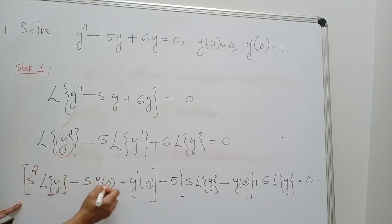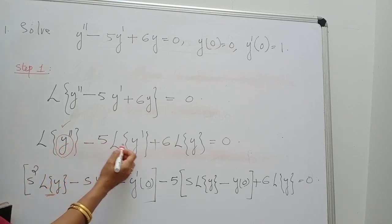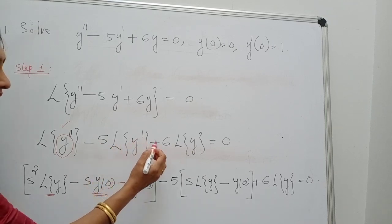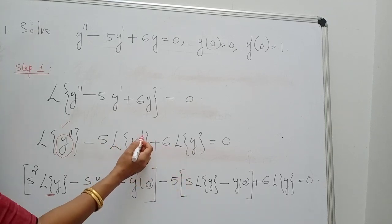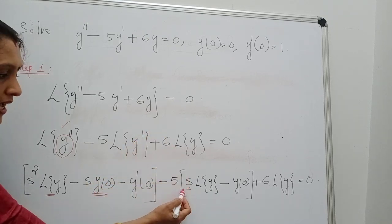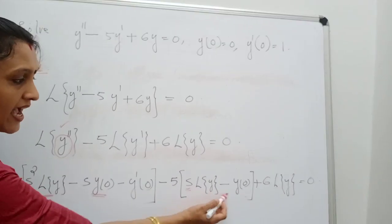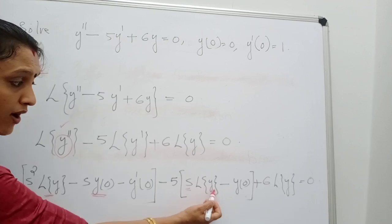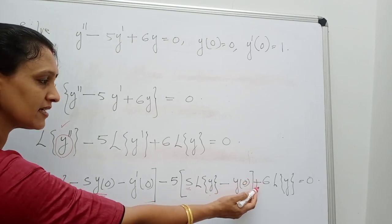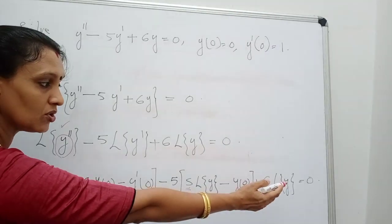So, L{y''} − 5·L{y'} + 6·L{y} = 0. The expansion of L{y'} is: since it is a single dash, the term starts with s, so s·L{y} − y(0). Therefore the full equation is: [s²·L{y} − s·y(0) − y'(0)] − 5·[s·L{y} − y(0)] + 6·L{y} = 0.